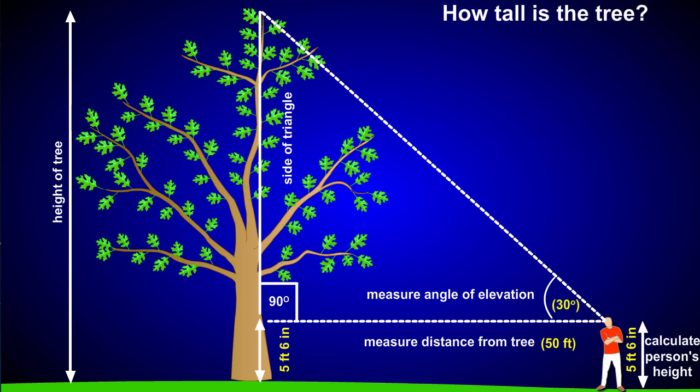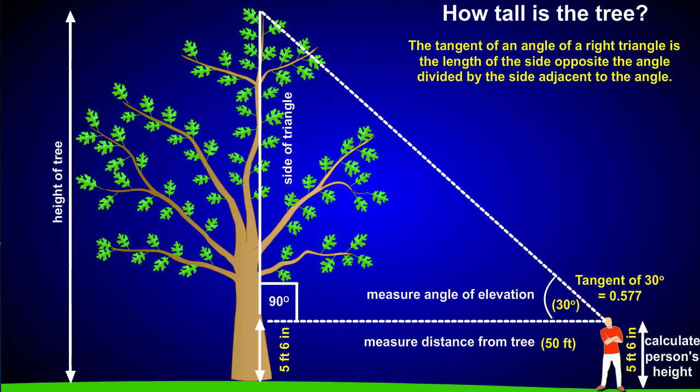Next, use a calculator to determine the tangent of the angle of elevation. The tangent of 30 degrees is 0.577. Remember that the tangent of an angle of a right triangle is the length of the side opposite the angle divided by the side adjacent to the angle. In this example, the side opposite the angle is the height of the tree, and the side adjacent to the angle is the distance from the tree, or 50 feet.